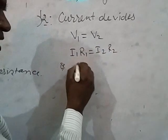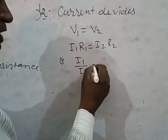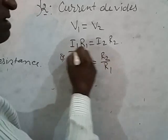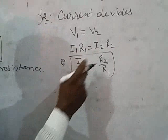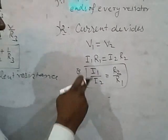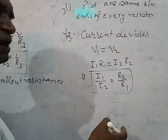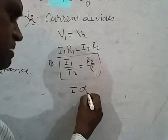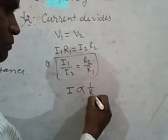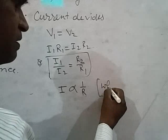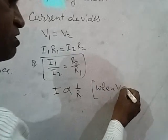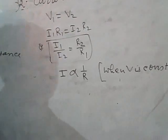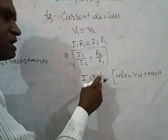From here one thing we get: if resistance is more, then current less will flow in it. Resistance is less, then current more will flow in it. Here you see I is inversely proportional to R. When? When V is constant. When potential difference is same between all ends, then I is inversely proportional to R.